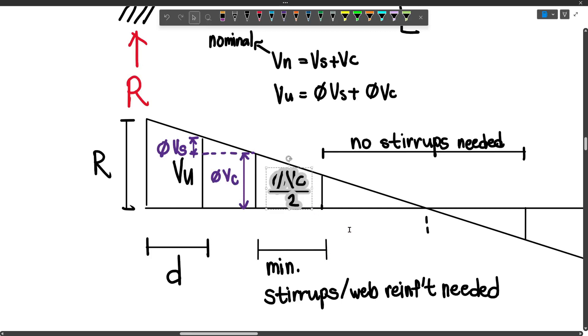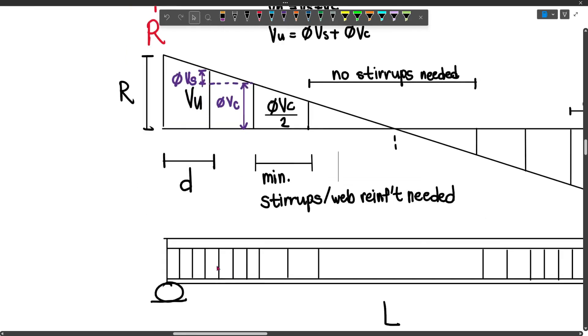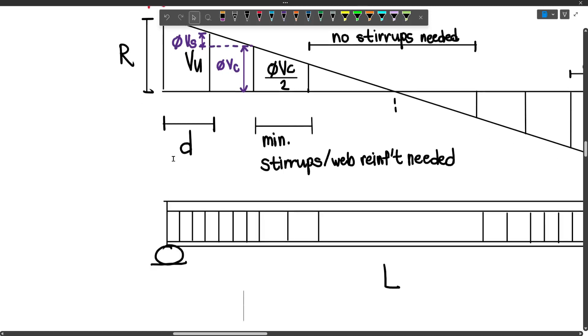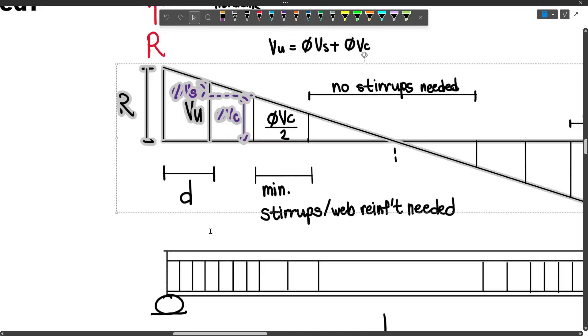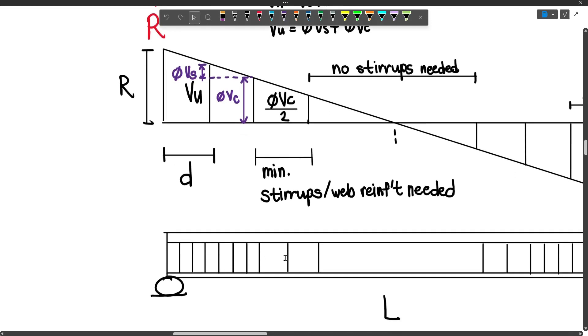At half the shear strength provided by the concrete, minimum stirrups or web reinforcement are needed. As you can notice here, the spacing is closer. Closer spacing means the beam needs to be stronger. At the critical section, the stirrups are very close together because the shear is large in that part.